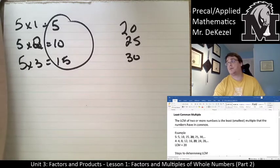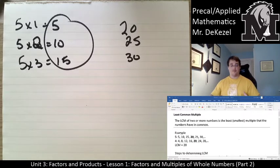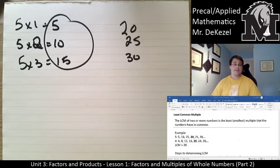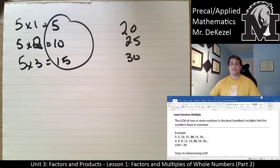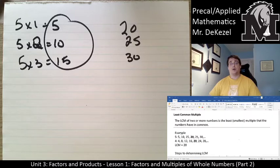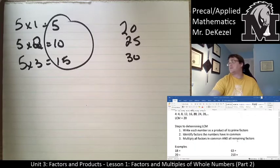What we often want to know is the least common multiple between two or more numbers. The lowest common multiple of two or more numbers is the smallest multiple the numbers have in common. For example, with 5 and 4 — writing out their multiples: 5, 10, 15, 20 and 4, 8, 12, 16, 20 — the lowest number they have in common is 20. That's why the LCM is 20.